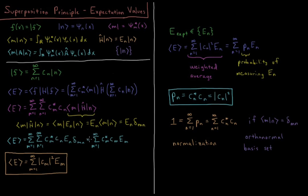We eliminate the inner loop, leaving a sum from m equals 1 to infinity of c_m star c_m times E_m. Since c_m star times c_m is the magnitude of c_m squared, we have the average energy as a sum from m equals 1 to infinity of |c_m|² times the energy E_m of the m-th eigenfunction. If c_m equals 0 for an eigenfunction, it does not contribute to the sum — only eigenfunctions with non-zero coefficients in our superposition contribute.